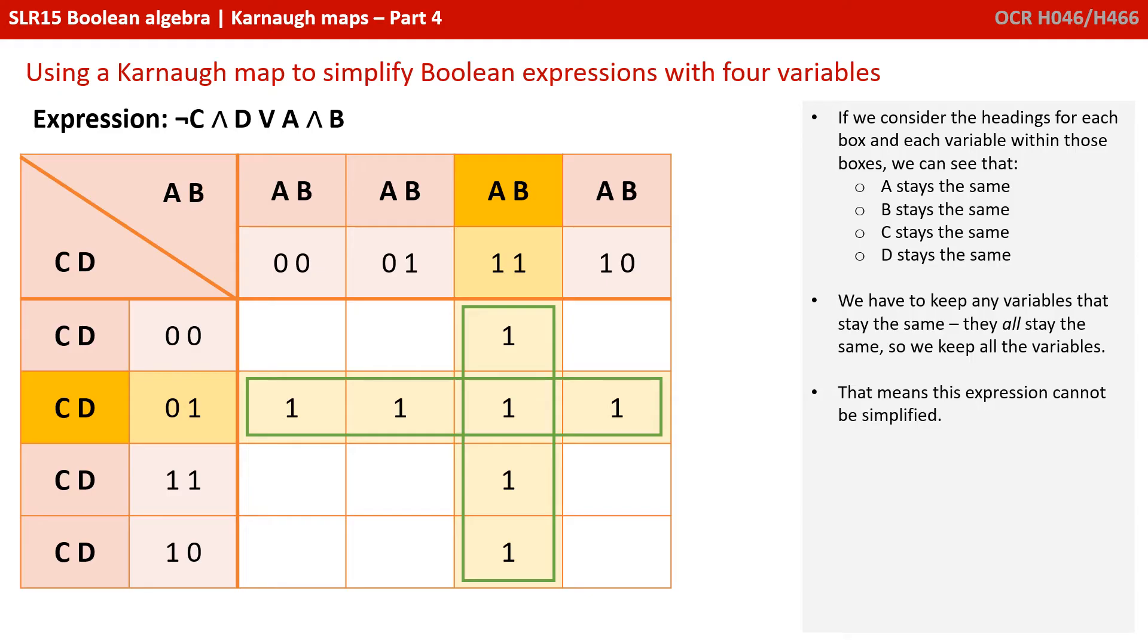If we consider the headings for each box and each variable within those boxes, we can see that A stays the same, B stays the same, C stays the same, and D stays the same. We have to keep any variables that stay the same. Well, they all stay the same, so we keep all the variables. What this tells us is that this expression cannot be simplified.